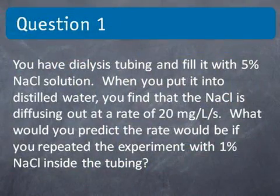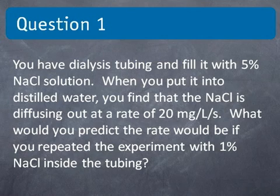First off, here's a question. You have dialysis tubing and you fill it with 5% sodium chloride solution. When you put it in distilled water, you find that the sodium chloride is diffusing out at a rate of 20 milligrams per liter per second. What would you predict the rate would be if you repeated the experiment with 1% sodium chloride solution inside the tubing?